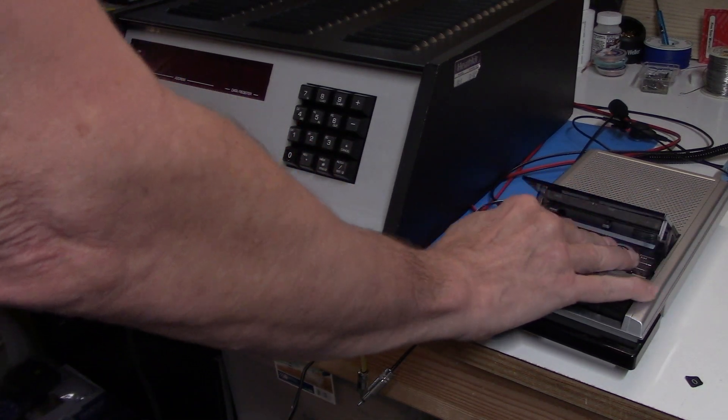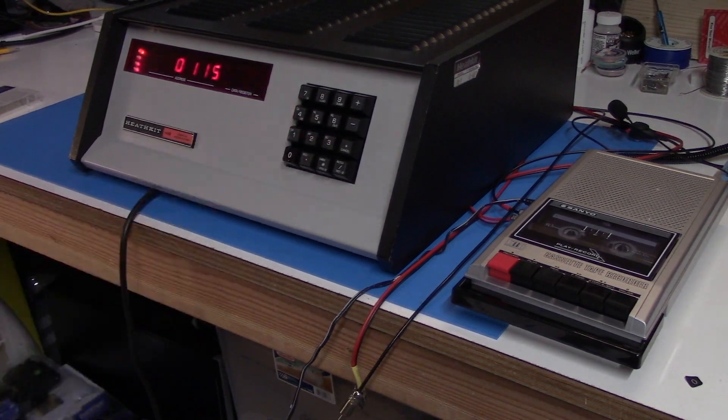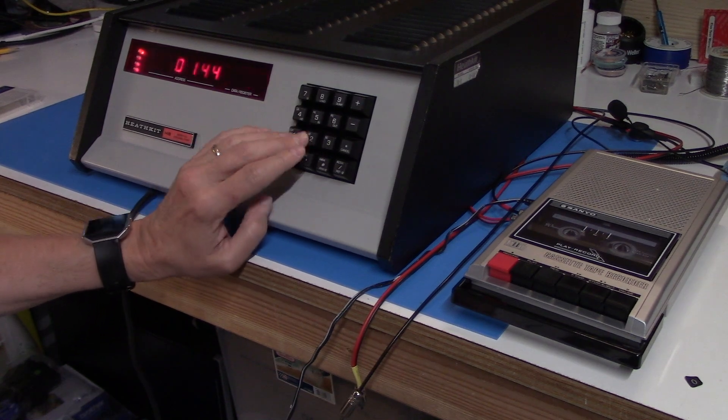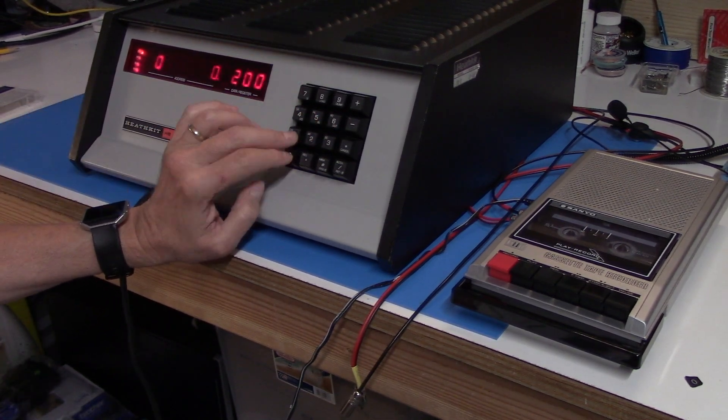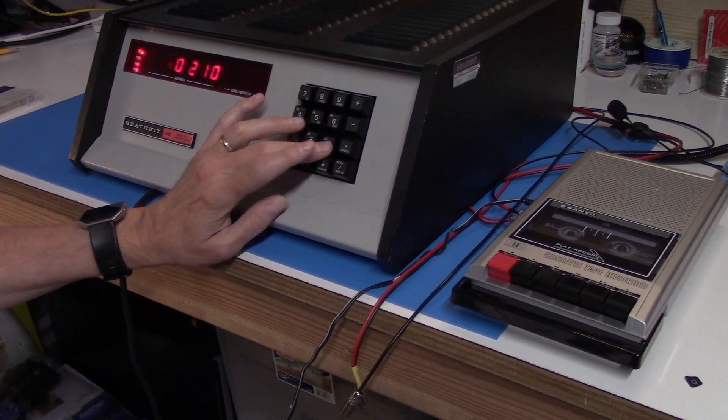We're going to need to have a program that we can record to the cassette so I think I'll just use the demo program again that's in the front of the H8 operations manual. If only I could keep programs in this fast I wouldn't need a cassette but unfortunately this is only done through the magic of editing.